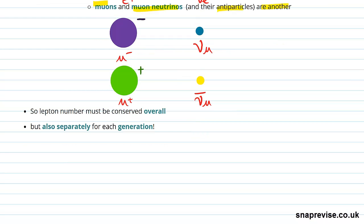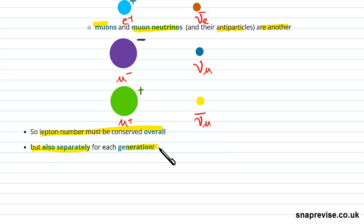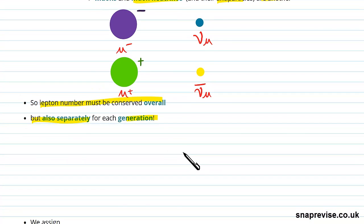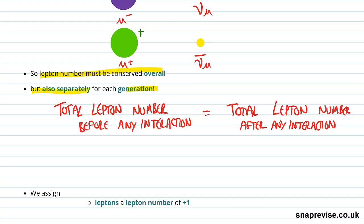What we see is that lepton number must be conserved overall, but also separately for each generation. What that means is that our total lepton number before any interaction has to be the same as our total lepton number after any interaction. That always has to be the case, but that's not enough.